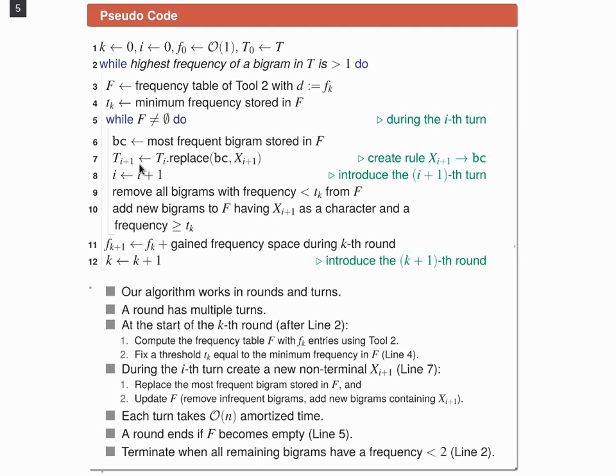Then we end the turn and remove all bigrams whose frequencies drop below the threshold from f. Next, we add new bigrams to f that have this new introduced non-terminal as a character, whenever the frequencies are above the threshold. Each turn takes order n amortized time. And we end the round whenever the frequency table f becomes empty. And then we count the gain space during the k-th round and add it up to fk plus 1. And finally, we end the round.